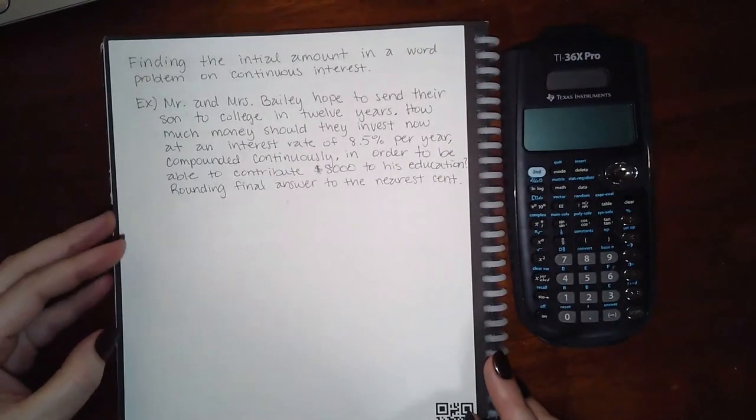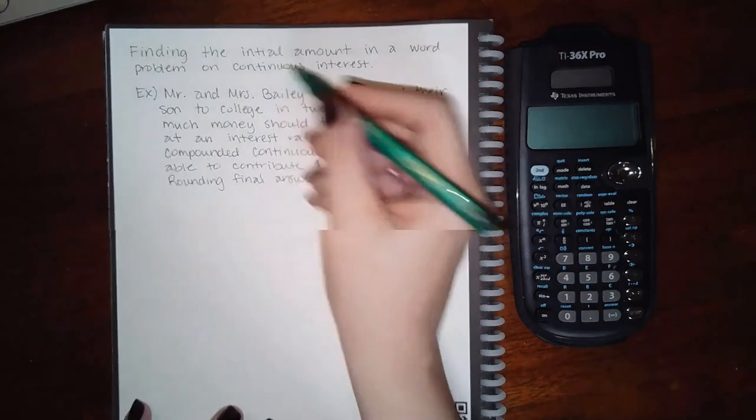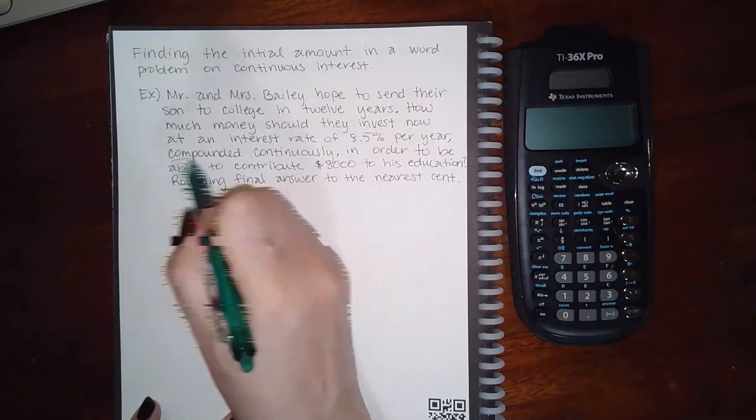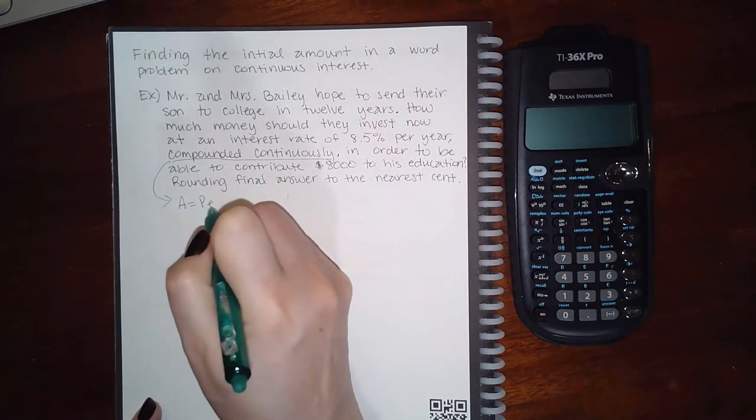Okay, here it says finding the initial amount in a word problem on continuous interest. So continuous interest, compounded continuously, means I'm going to be using this formula.